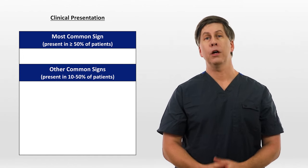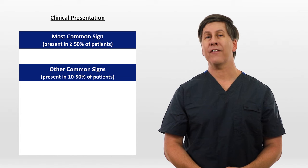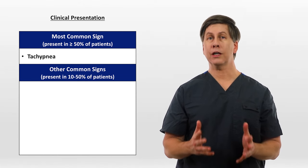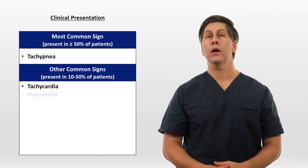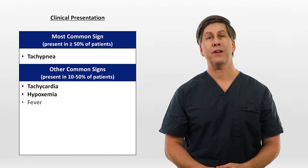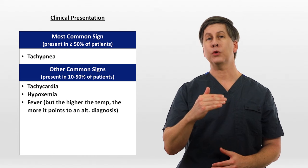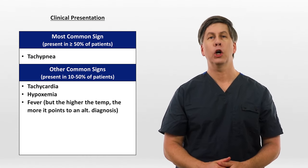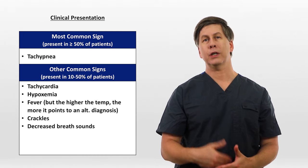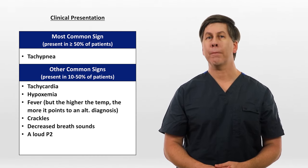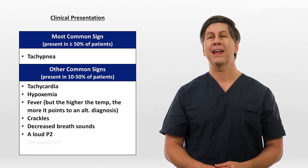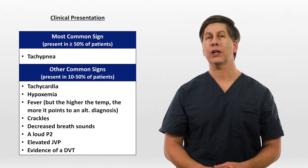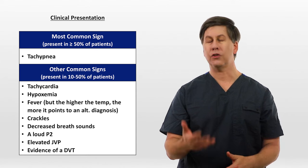With a physical exam, the only sign present in at least half of patients is tachypnea. Other common signs include tachycardia, hypoxemia, fever — though the higher the fever, the more it points to an alternative diagnosis such as pneumonia or empyema — crackles, decreased breath sounds, a loud pulmonary component of the second heart sound, elevated JVP, and exam evidence of a DVT such as unilateral leg swelling, edema, or tenderness.